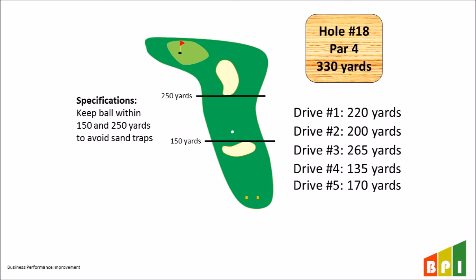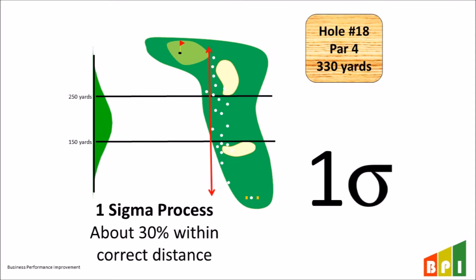How do we assess how well we are doing at staying within the limits? Let's discuss the concept of Sigma levels. Here is what a one sigma process would look like for a golfer. To determine the Sigma level, we collect data on numerous tee shots — usually 30 or more — and we measure the variation of the shots by calculating a standard deviation. Then we compare the average and the standard deviation of the tee shot distance to the limits. As you can see, there is a lot of variation in the shots, and many are well above and below the limits, so it will likely end up in the sand trap. Therefore, we have a high probability that it will end up in a sand trap.